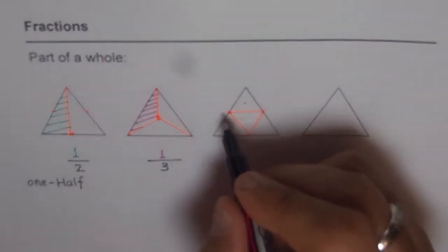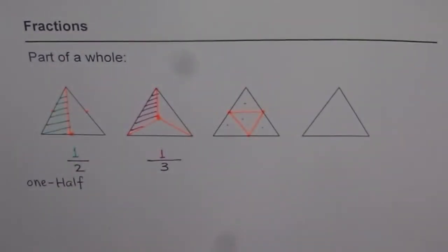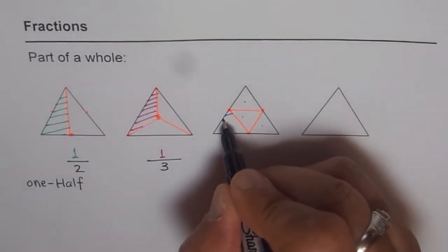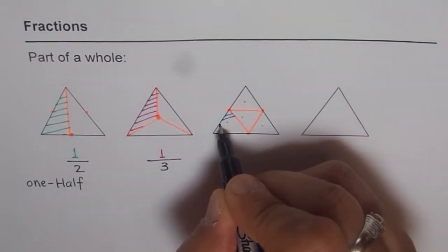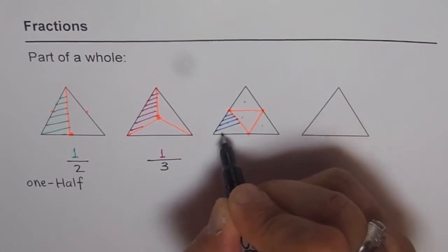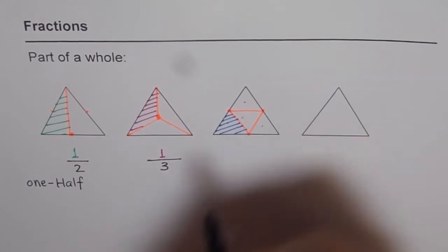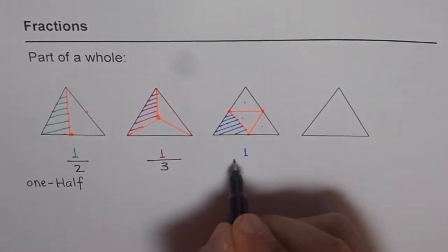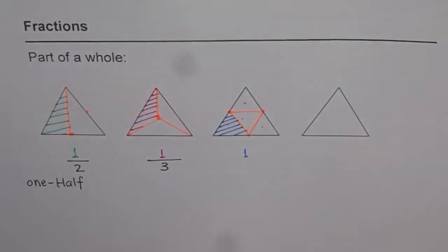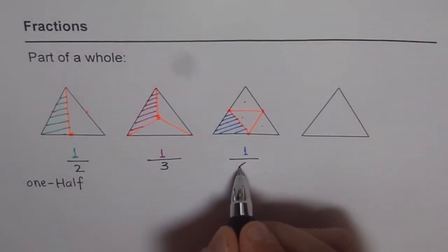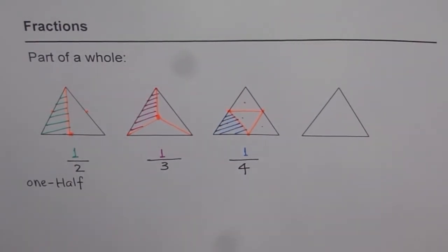Let's shade one of them — using blue this time. So that is how much? One out of how many parts? One out of four. There are four equal parts here, and we have one out of four.